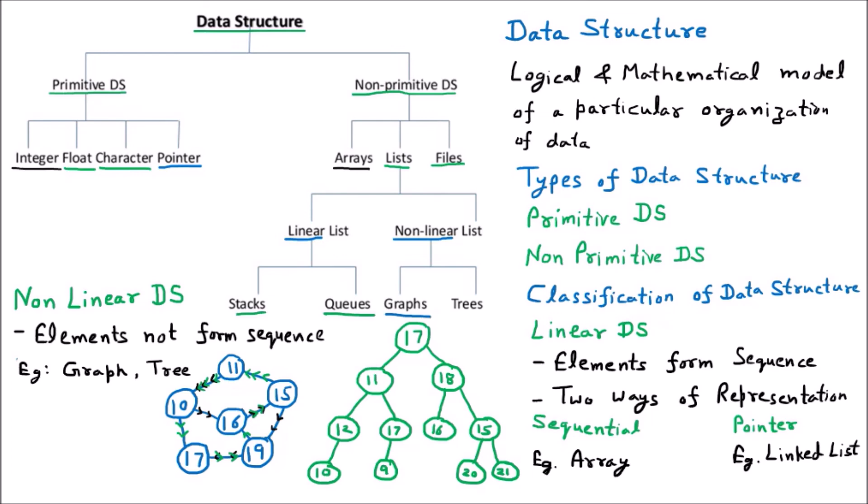So in the non-linear data structure we are having the two major categories. One is graph and one is the tree. So with that we are having no fixed sequence to be formed and we can go with any of the order of our choice. So that is the non-linear data structure.